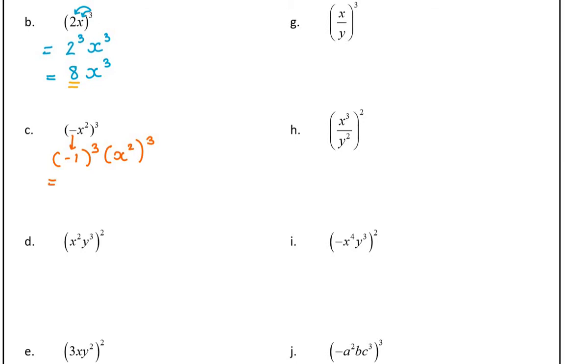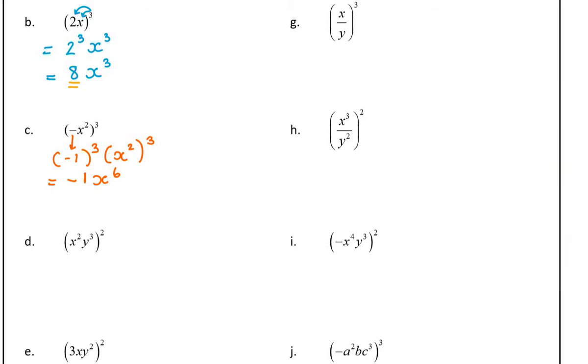Now negative 1 cubed is a negative times a negative times a negative, which is negative, and 1. So you don't have to write that. You could just say negative x to the power of 6. Don't forget, when you raise a power to another power, you multiply.